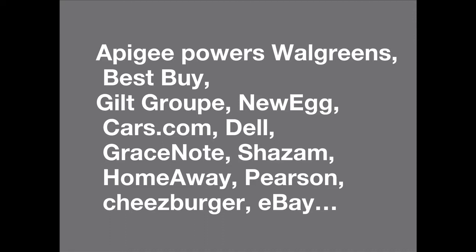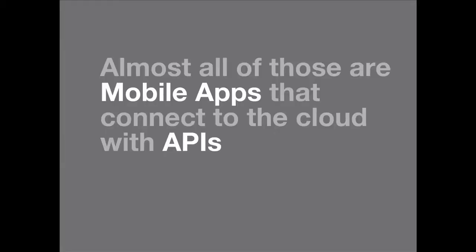Apigee powers a bunch of big enterprise companies such as Walgreens, Best Buy, Dell, and Pearson — companies that use internal and external developers to create awesome products. Ed, out of all of these customer names, why did you pick these? These are all cases where the primary users of these APIs are app developers turning them into customer-facing user experiences.